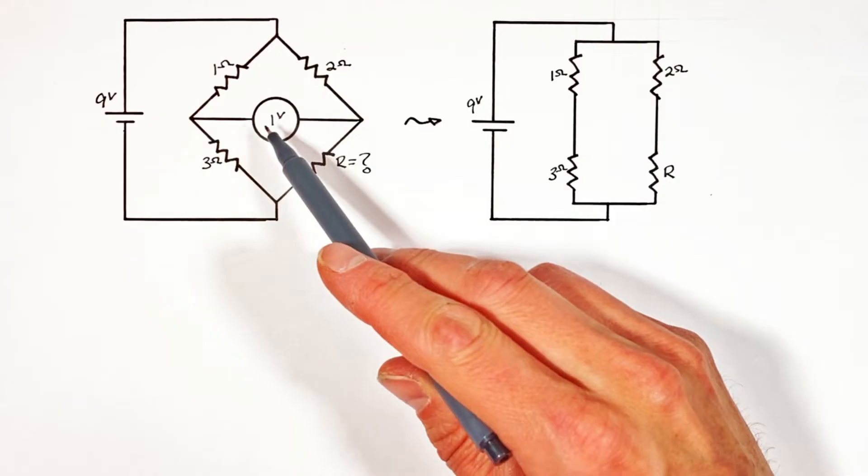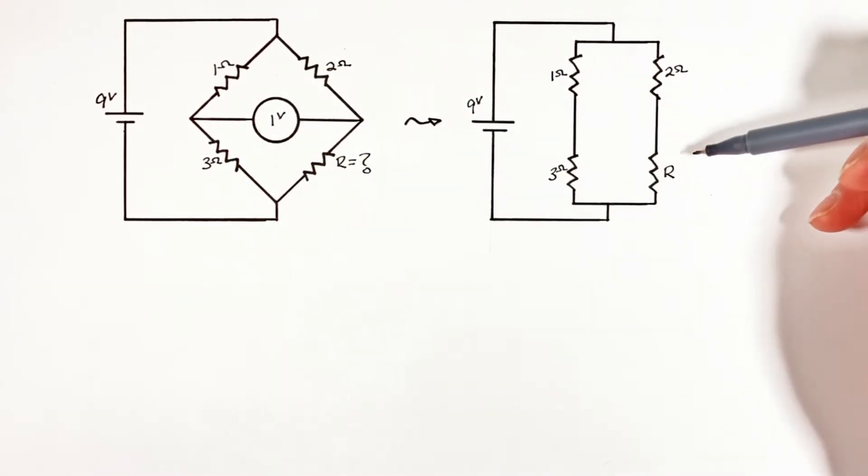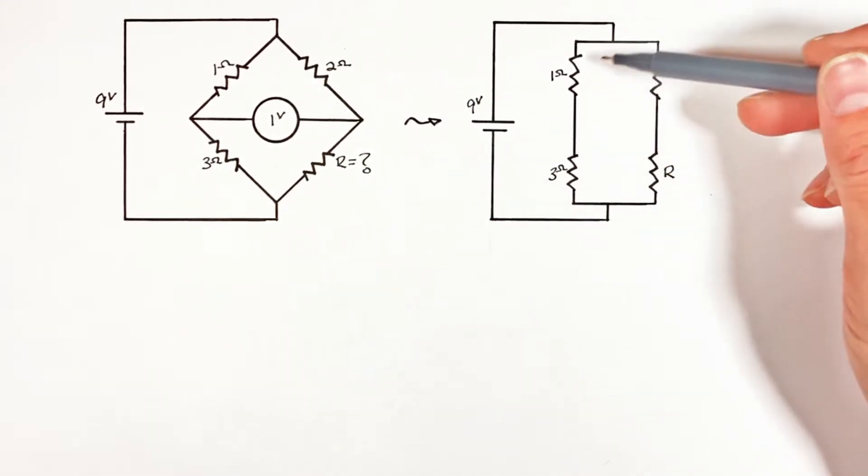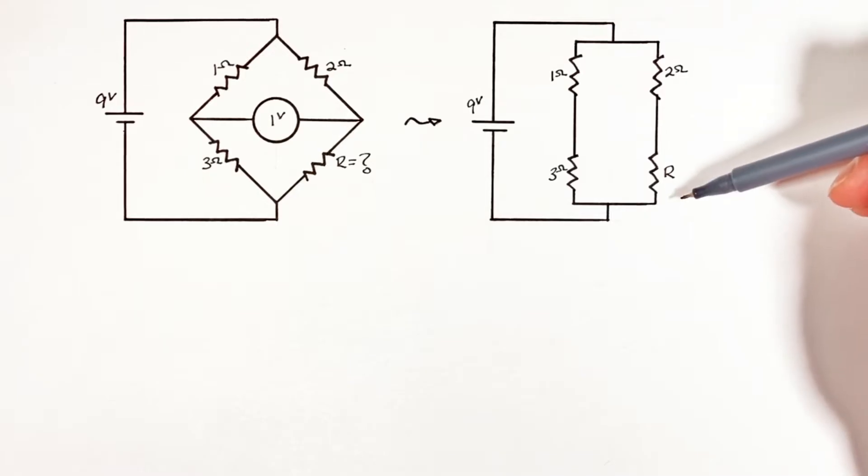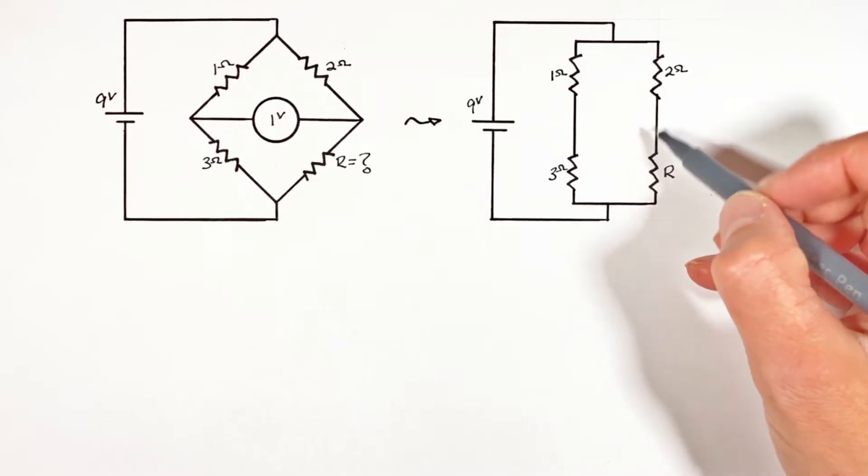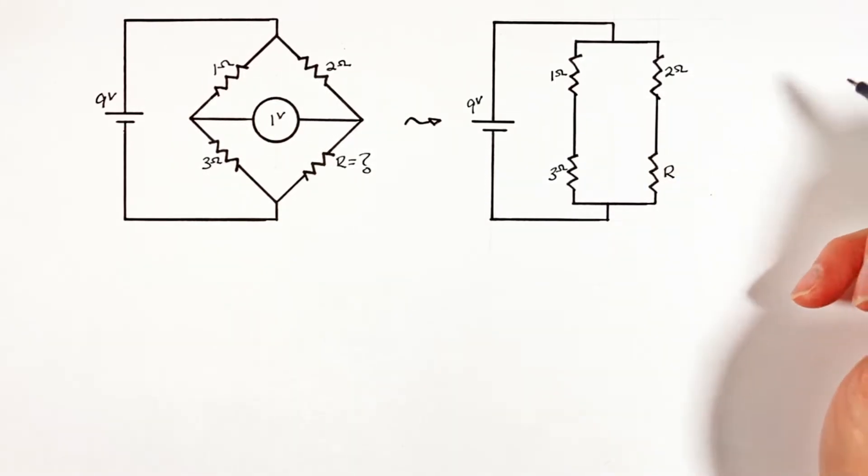See because this voltmeter acts as though it's an open switch, really all this circuit is is simply two sets of resistors in series wired up in parallel with one another. Now we don't need to take the circuit all the way down to its equivalent resistance. We can solve for this unknown value R with what we have right here.